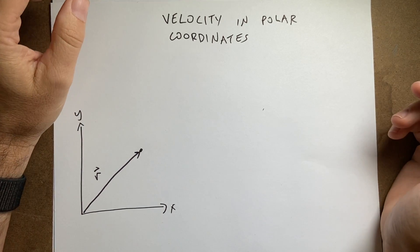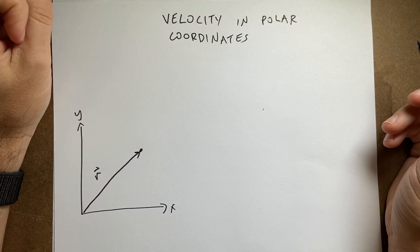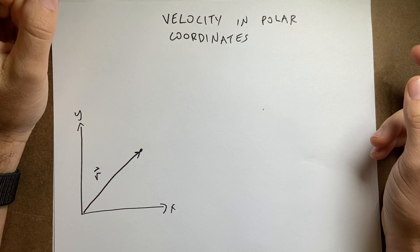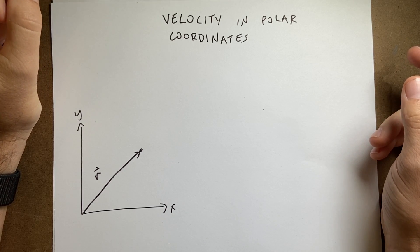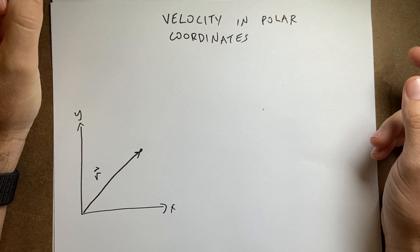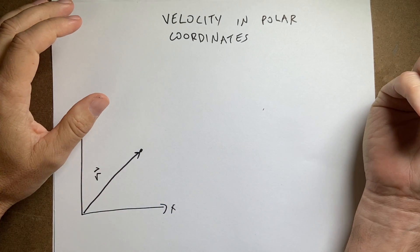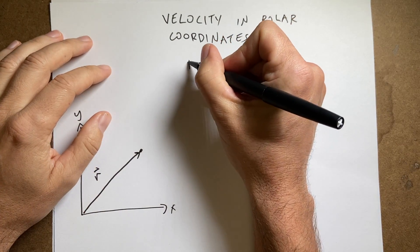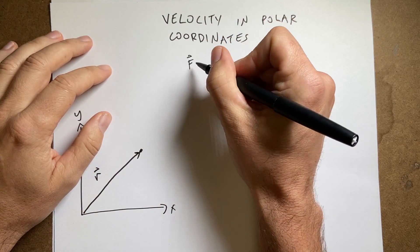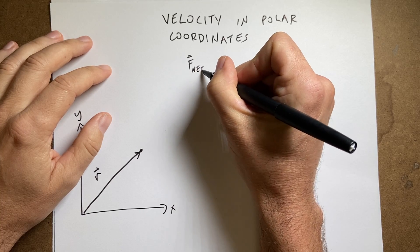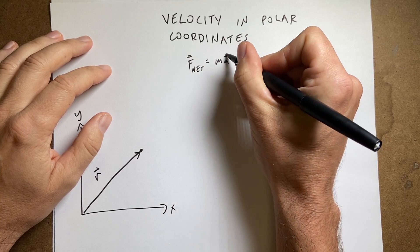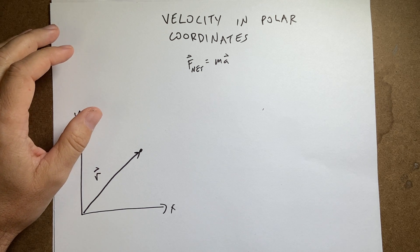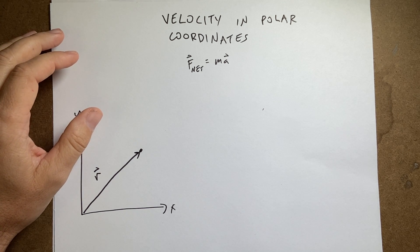Okay, back to classical mechanics. Everything I've done so far was just fun and silly stuff. Now we're going to do some real stuff. Let's write down why we even care about velocity. We care about velocity because we care about acceleration, and we care about F_net = ma. Those are vectors, and the vectors depend on their components, and the components depend on the coordinate system.